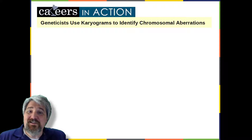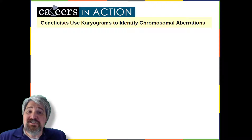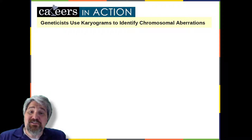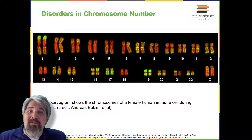To obtain the classic depiction of the karyotype, in which homologous pairs of chromosomes are aligned in numerical order from longest to shortest, the geneticist obtains a digital image, identifies each chromosome, and manually arranges the chromosomes into this pattern. At its most basic, the karyogram may reveal genetic abnormalities in which an individual has too many or too few chromosomes per cell.